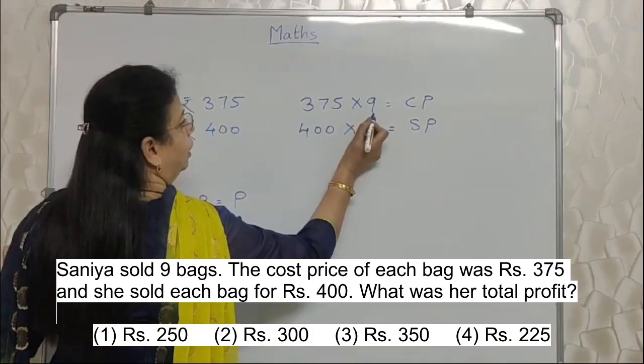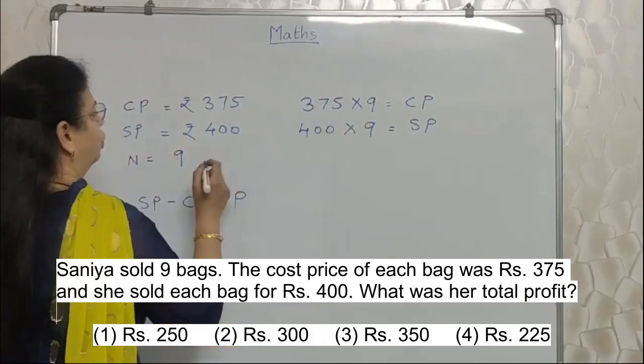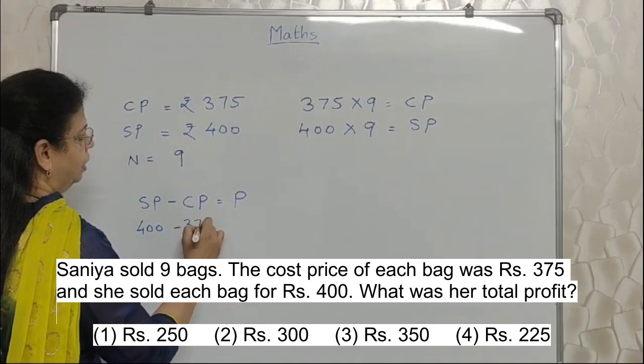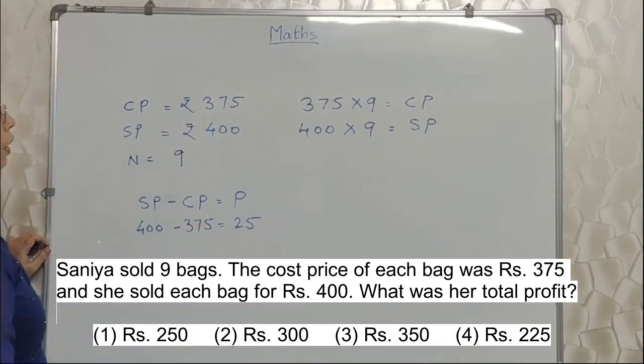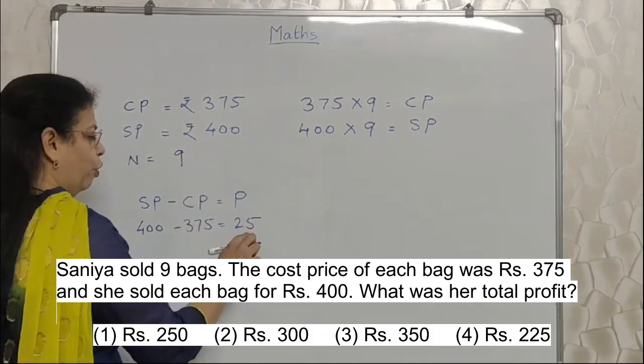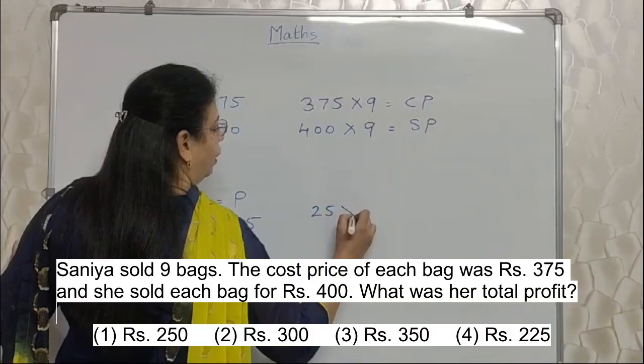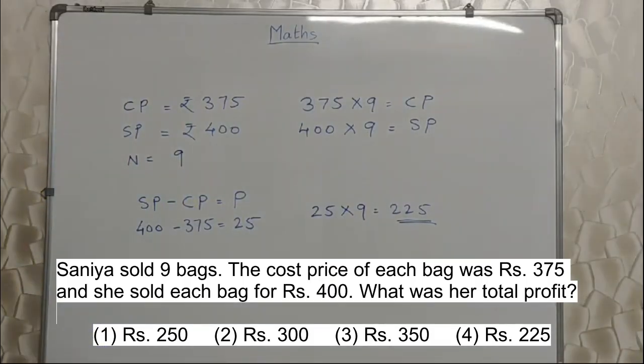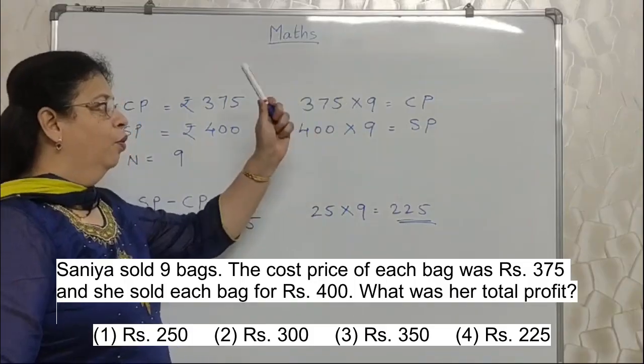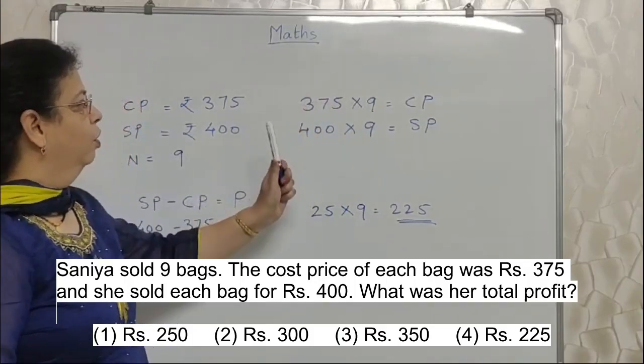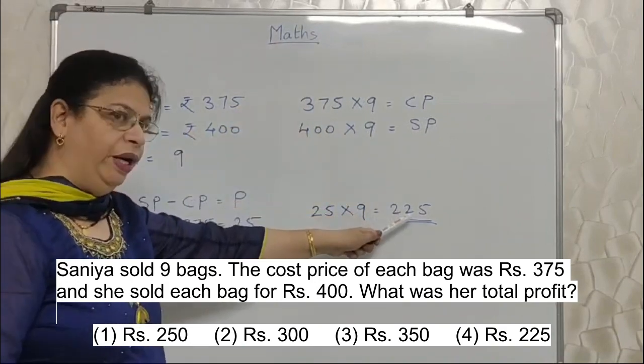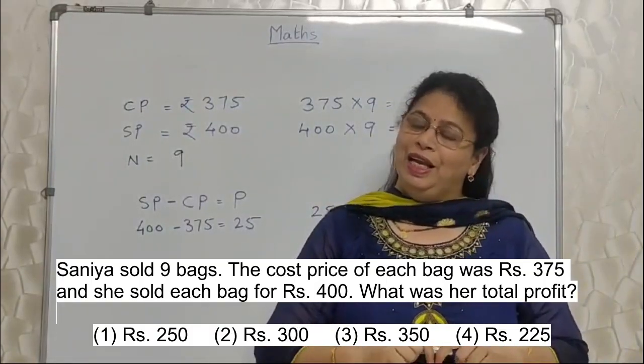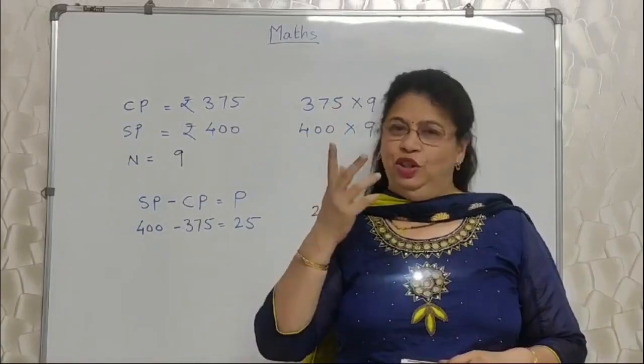So what we can do? Instead of finding out the profit of 9 bags, we will find out the profit for 1 bag. 1 bag sold for 400 rupees, its cost was 375. So what was the profit? 25 rupees was profit for 1 bag. When we know the profit of 1 bag, it is so easy to find out the profit of 9 bags: 25 into 9 equals 225. Isn't it easy? We will get exactly the same value if we do this: 375 into 9, 400 into 9, and then we do subtraction. We will get 225. What is the difference between these two methods is the time factor, which is very crucial in any competitive exams. So we have to work smartly.